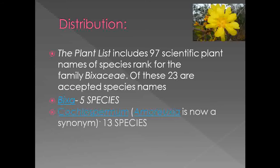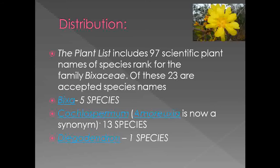Now let's see about the distribution of this family. Most of the members belonging to this family grow in tropical, subtropical and temperate regions of the world. According to the plant list, this family shows presence of three genera and a total of about 97 species. Out of those 97 species, only 23 species are accepted.